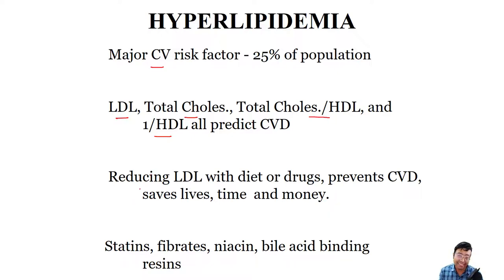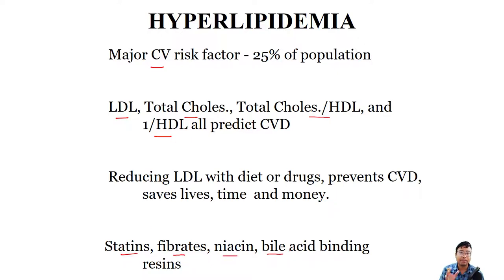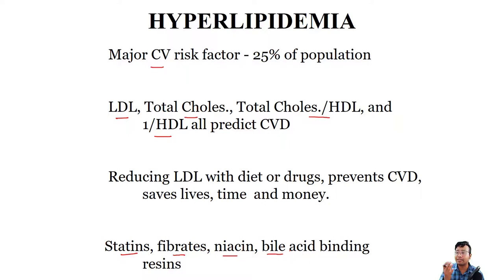The drugs we will study in detail in Pharmacology include statins, fibrates, niacin, and bile-acid binding resins — these are the drugs of choice for treating hyperlipidemia. Examples are atorvastatin, simvastatin, lovastatin, and fenofibrates, which are commonly prescribed to heart patients and obese patients.